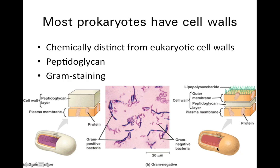That additional membrane layer outside the cell wall prevents the stain from adhering to the peptidoglycan, which is why they don't look as dark and purple. So in gram-negatives, they have this outer membrane, and they might have something that, in this illustration, kind of looks like grass growing on a lawn, but these are actually lipopolysaccharides, or chains of carbohydrates with fats.